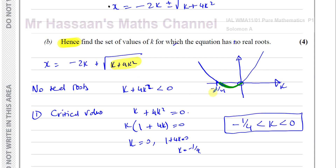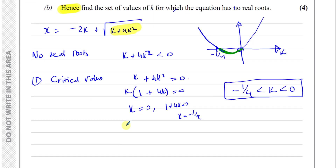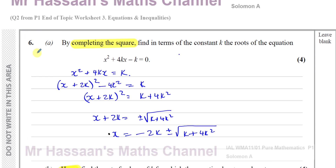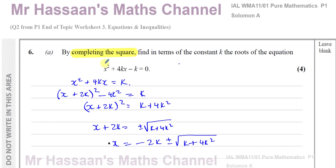So those are the range of values of k for which the equation has no real roots. If the question says 'find the set of values of k', it's better to write it as: k is such that k is between minus one quarter and 0. That's the answer to question 6 part B from Solomon A, and question 2 part B from end of topic worksheet number 3 from P1.